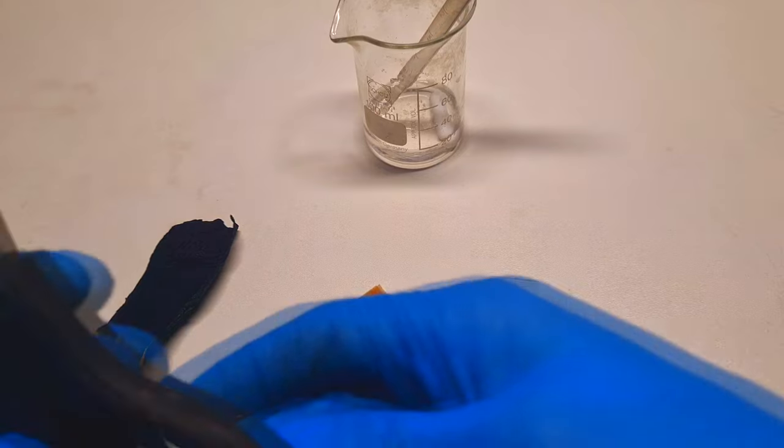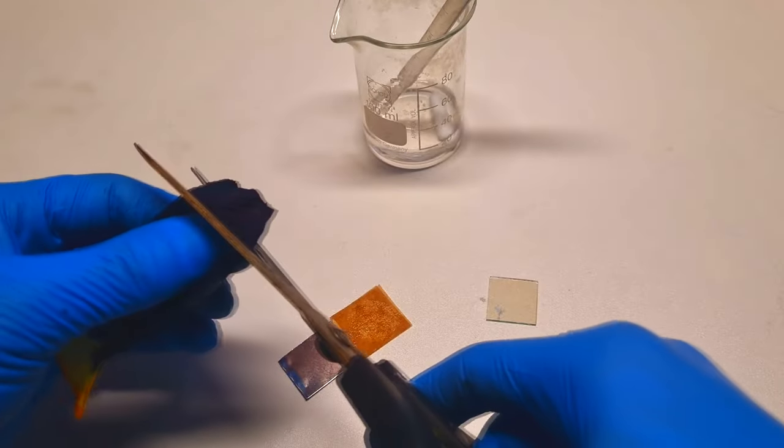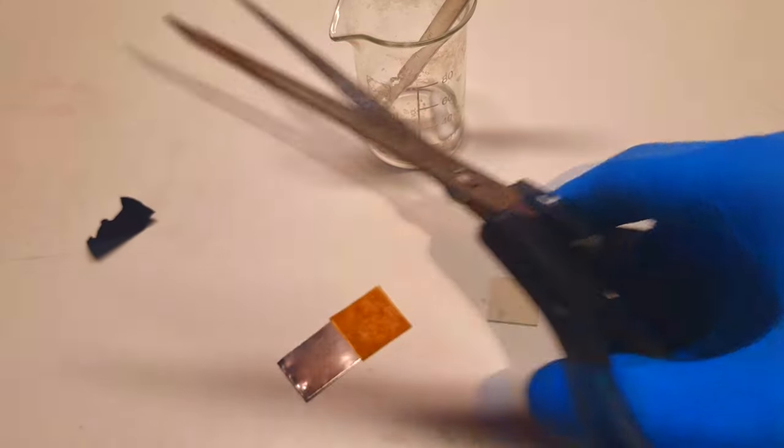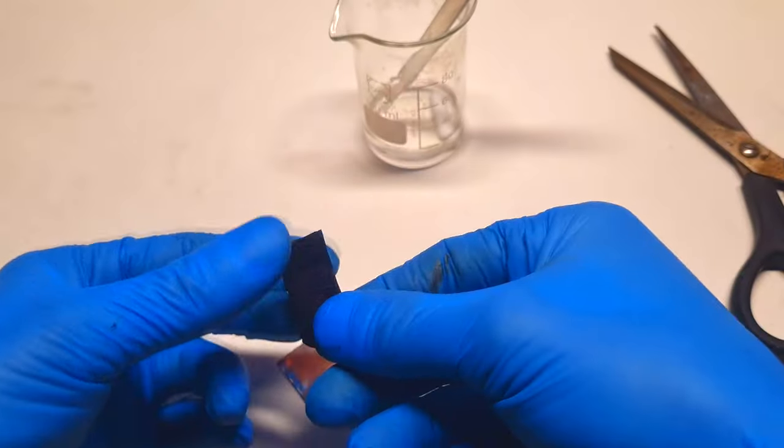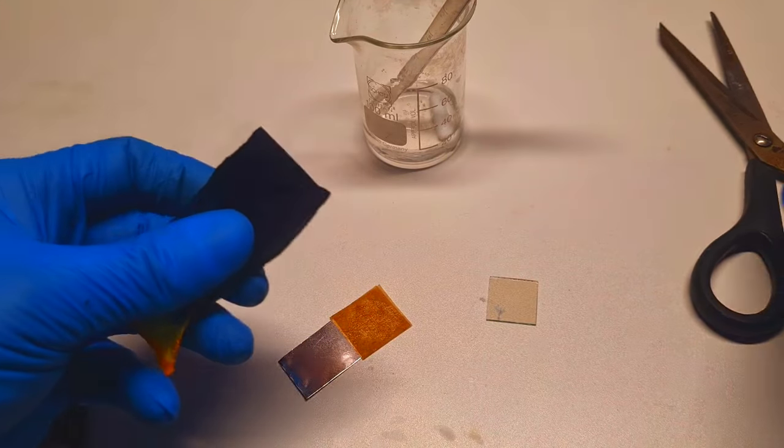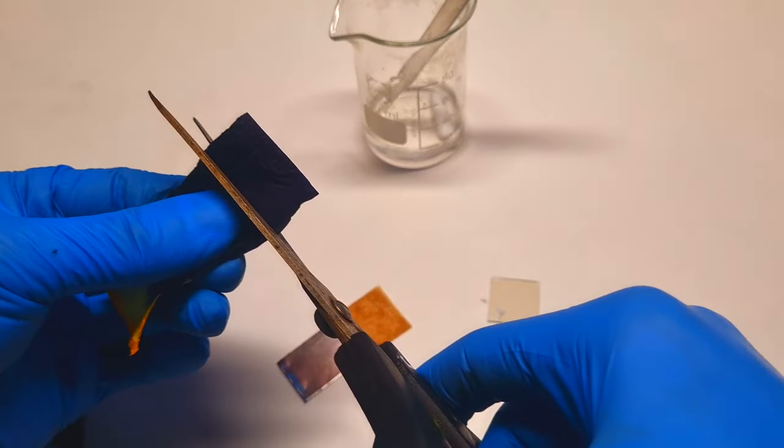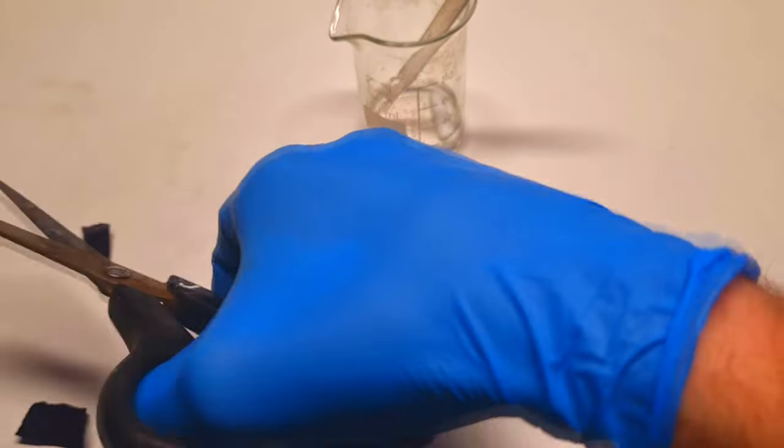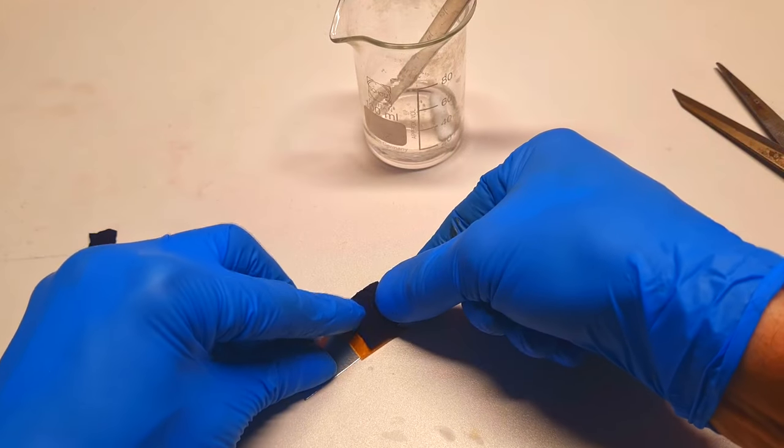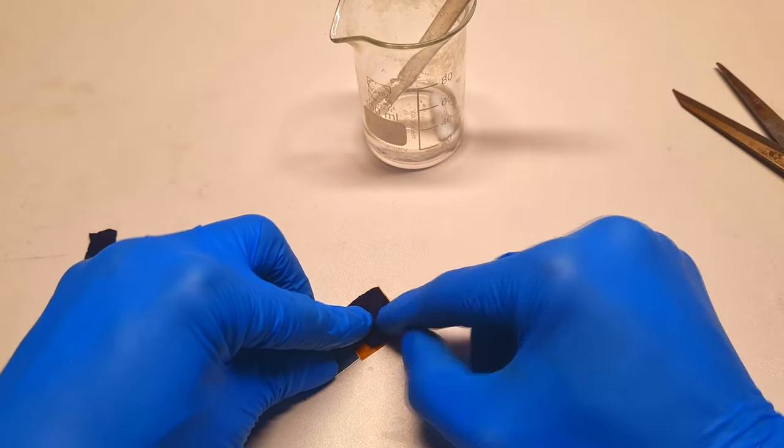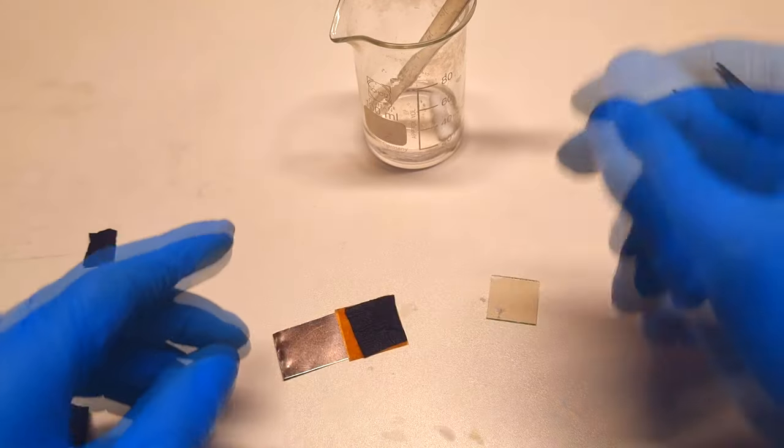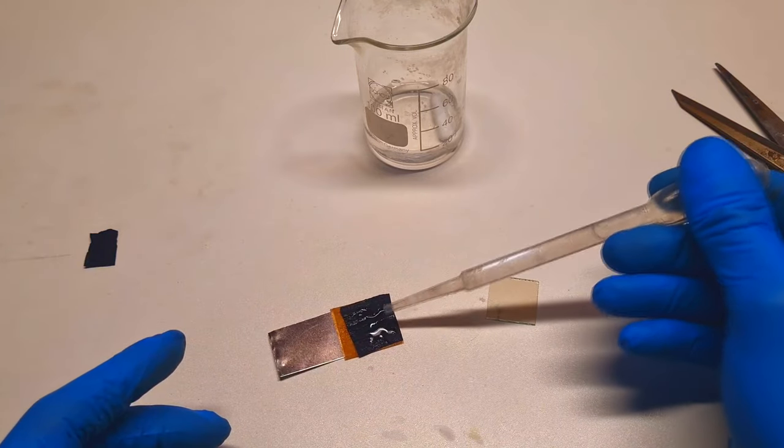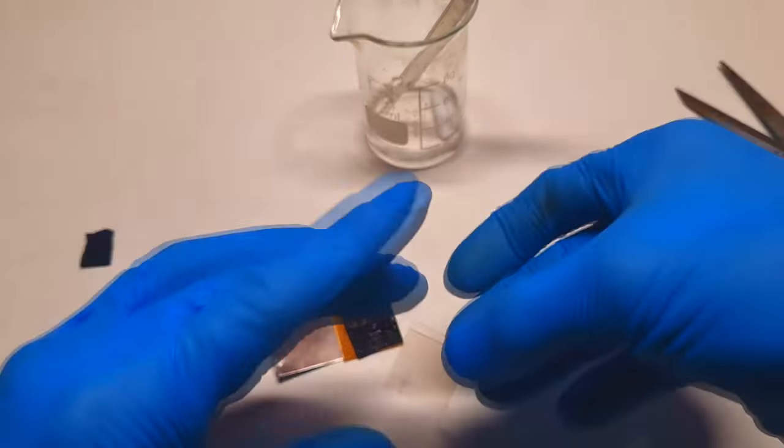I will also cut some small piece of this Prussian blue. A little bit more maybe. Like so. Also this Prussian blue I need to wet with the electrolyte. Nice.